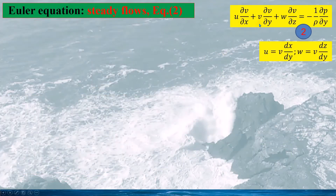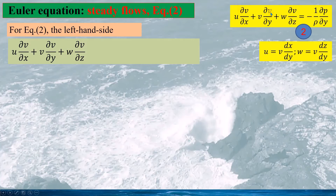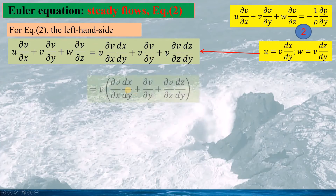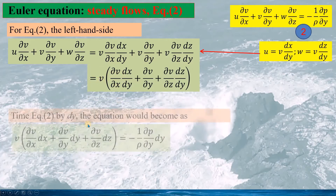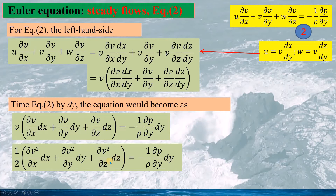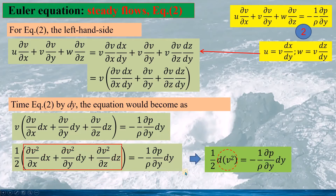Now we look at the second momentum equation. Here we use v to represent u and w on the streamline. The left-hand side of the momentum equation is calculated accordingly, substituting u and w into the expression so that v can be factored out. Multiplying momentum equation 2 by dy, the equation reduces such that the bracket term is the differential of v squared.